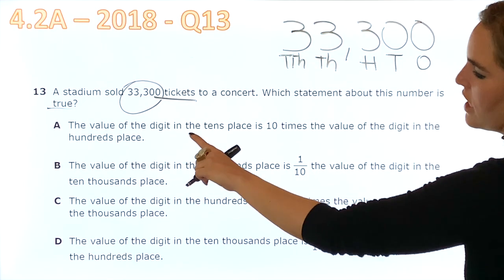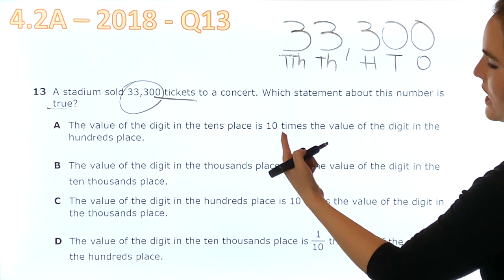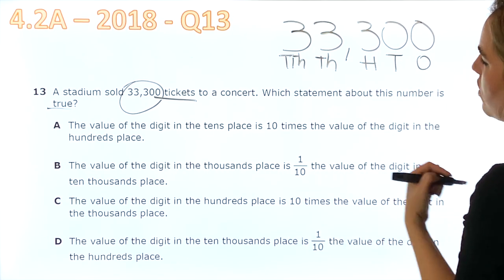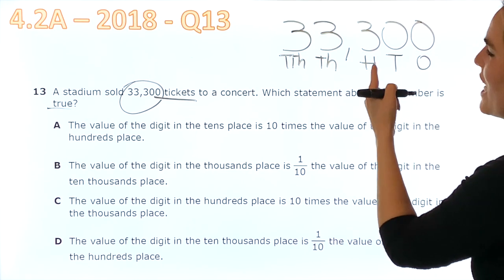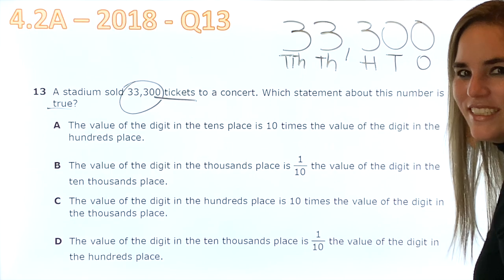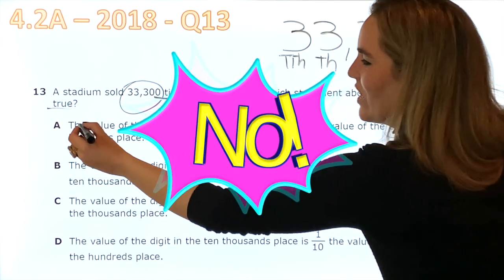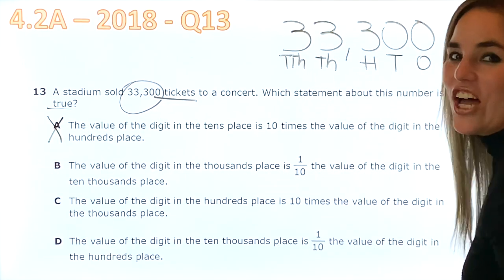The value of the digit on the tens place, this one, is 10 times the value of the digit on the hundreds place. Do you think that zero is 10 times 300? Absolutely no, it's not A.